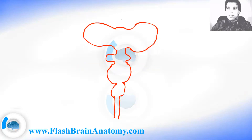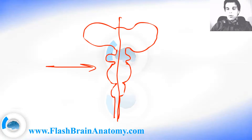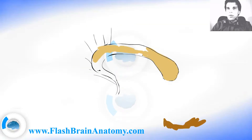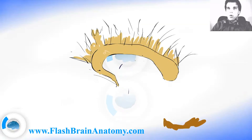If we take a completely developed brain and make a median section right here, and then look from this side, we would be able to see something that I will illustrate now step by step. First, I will illustrate the corpus callosum.